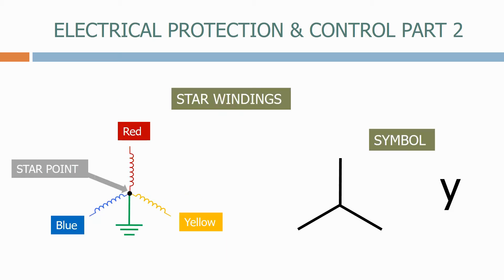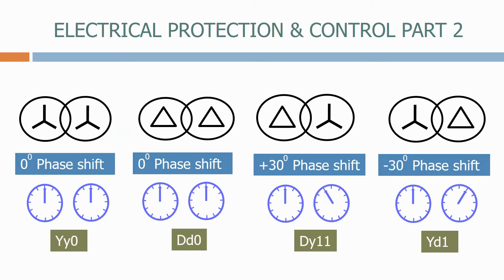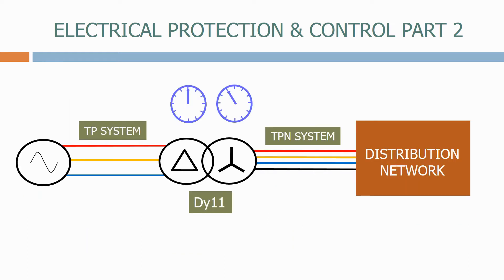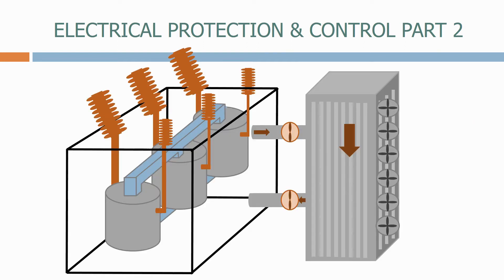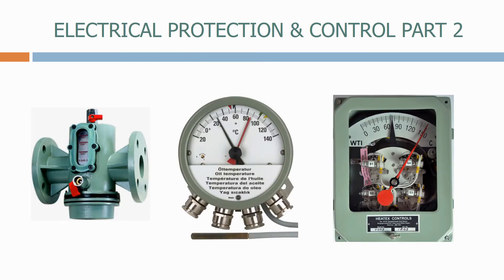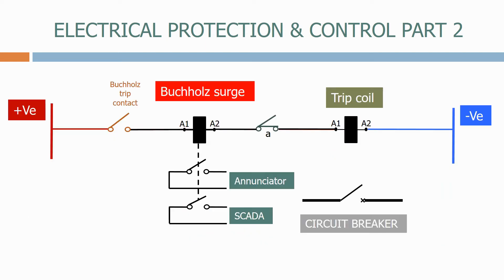Transformers are the most expensive device that we use on the electrical network, and looking after them is one of the main goals when we design protection systems. In the first of five sections on transformers we look at some of their basic design features, including how we connect the windings and how these connections lead to different vector groups. In the next section we will look in detail at how transformers are constructed and how the cooling system of a transformer affects its rating. We then go on to look at some of the transformer devices that we use to make sure the transformer is operating within its parameters.